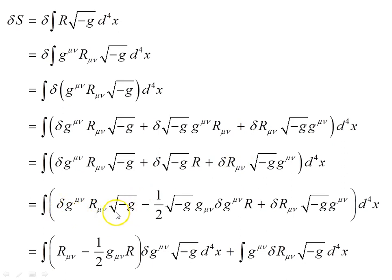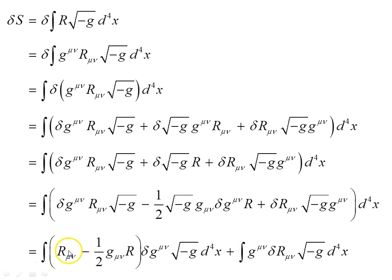Going down to the next line, we have the first term, and in the middle term we've contracted to regain the Ricci scalar R. The variation of the metric determinant — specifically the square root of the determinant of the metric — has been covered in a separate video on this channel, and that produced the result shown here. Collecting terms and factorizing out the inverse metric and the square root of the determinant gives us an object already looking familiar as the beginning of the Einstein field equations emerging.